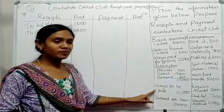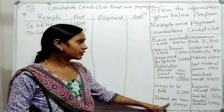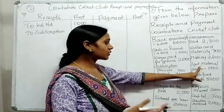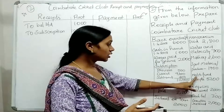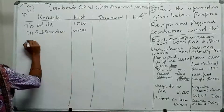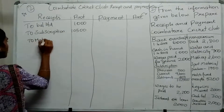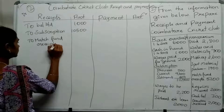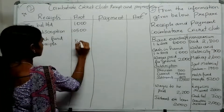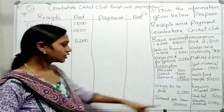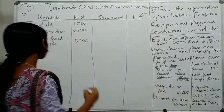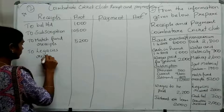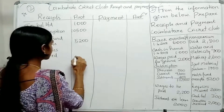On the Payment side: wages to be paid, interest on loan, pay expenses, sports material purchases. On the Receipt side: Match Fund Receipt is $5,200. Legacies received: $2,000.